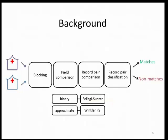With respect to field comparison in the privacy-preserving realm, there have been two dominant areas. The first is binary field comparison, where you just get an estimate of whether the fields agree or disagree but don't get a similarity estimate. Approximate field comparison metrics do provide an estimate of similarity — in addition to simple agreement or disagreement, they give you an indication that fields are, for example, 50 percent similar. With respect to record pair comparison, Fellegi-Sunter is a probabilistic method that has been dominant in the field. Fellegi-Sunter was designed to work with binary field comparison metrics, so Winkler at the U.S. Census Bureau introduced a modification to adapt it to approximate field comparison metrics.